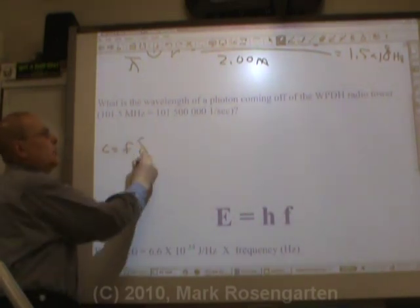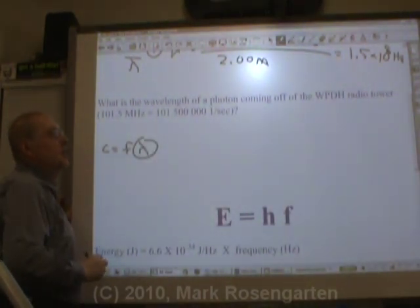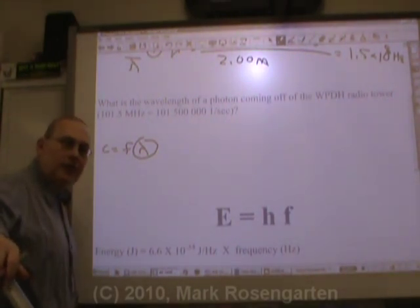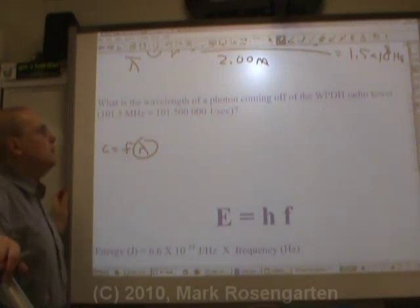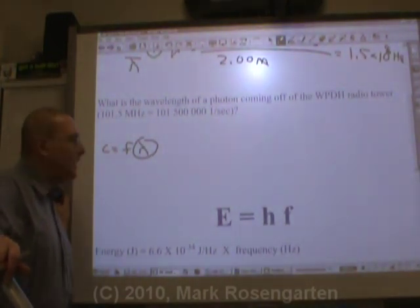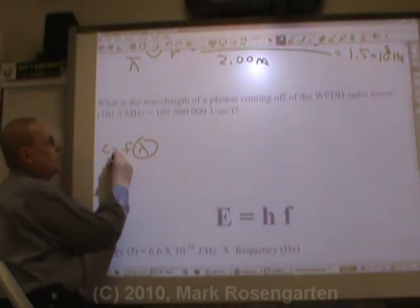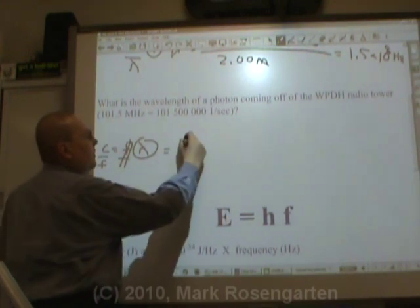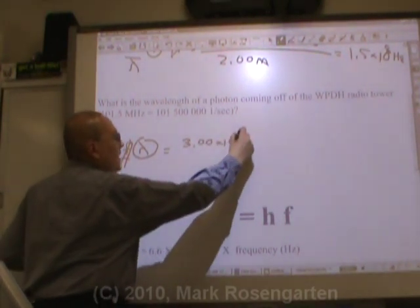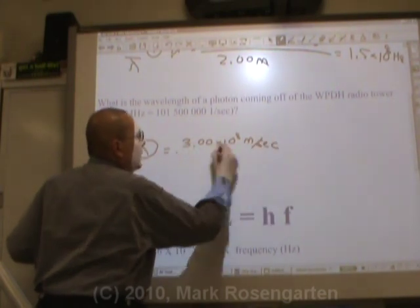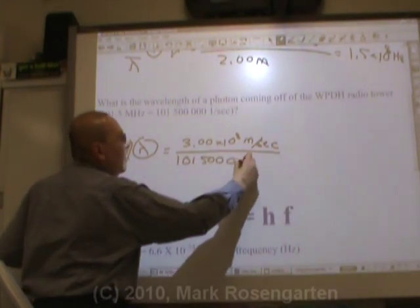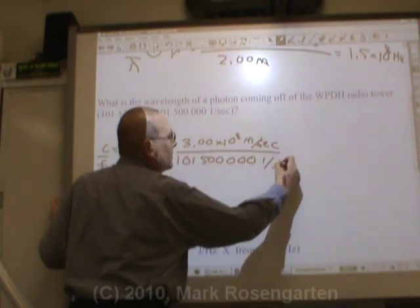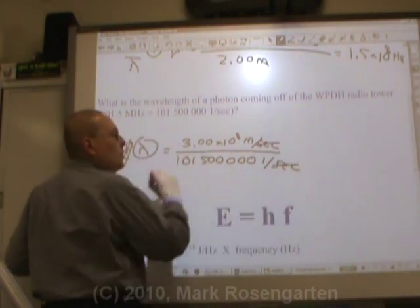What is the wavelength of a photon coming off the WPDH radio tower? For those who don't know, WPDH is a classic rock station located in Poughkeepsie, New York, with a frequency of 101.5 megahertz, or 101,500,000 per second. So we're trying to find the wavelength. Divide both sides by frequency: 3.00 times 10 to the 8th meters per second, divided by the frequency of 101,500,000 per second.